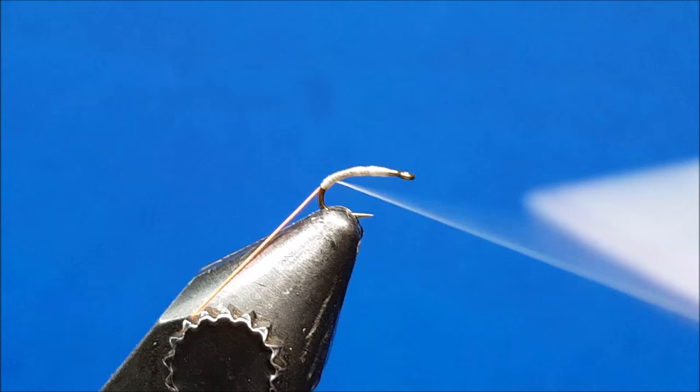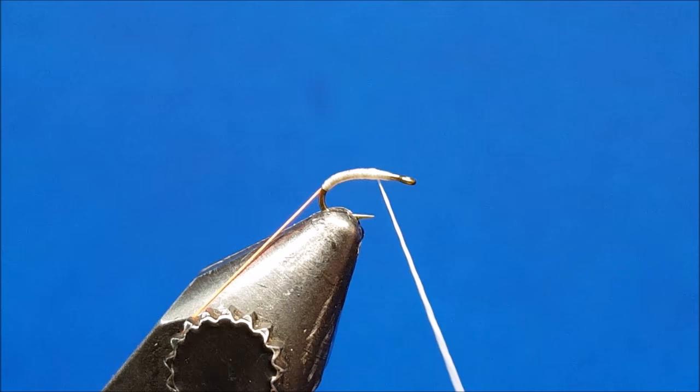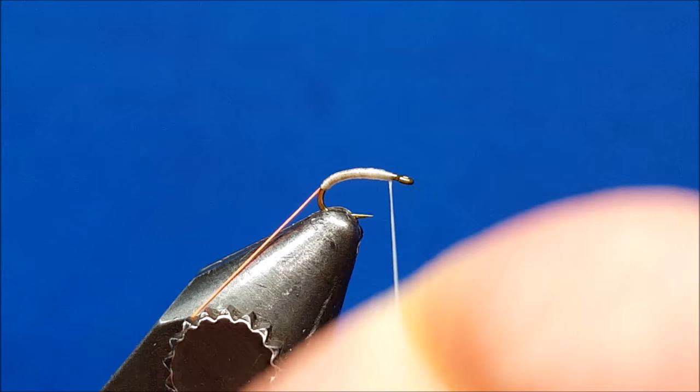Once I get to this point, I'll return, making sure that I'm laying down side by side wraps with the white, all the way to the front of the hook. I want to stop a little bit behind the eye of the hook so that I don't crowd it.